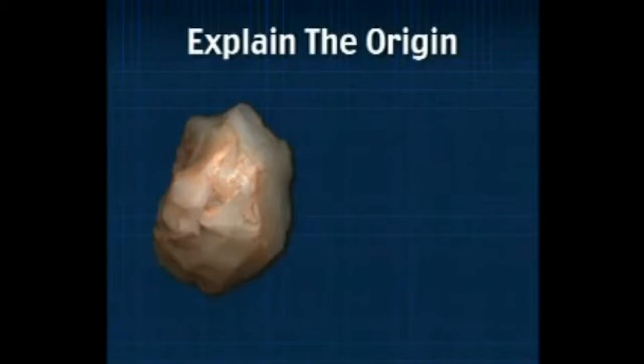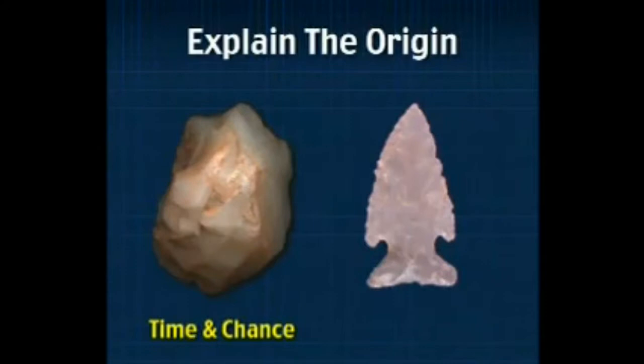Did this happen naturally or did someone design it? Well, you have a pretty good idea — this probably happens naturally. On the other hand, we see this rock and I do not think that happened naturally. I think created design is the best explanation and most would agree. But now we have entered into the area that has to be relegated to the Sunday school classroom — you cannot have that in the school room. You can, by looking at the empirical evidence, see whether this happened naturally or whether it was designed, and know this is not necessarily religion at all.